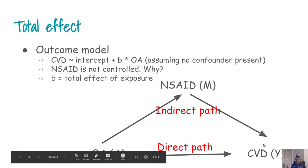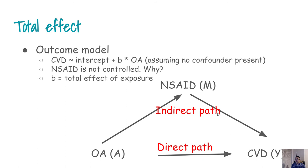When we are trying to get the effect of osteoarthritis on cardiovascular disease, we are basically talking about the total effect. We are not really dividing into direct or indirect, we are basically talking about the total effect. So how do we get the total effect? To get the total effect we do not need to adjust for the mediators.